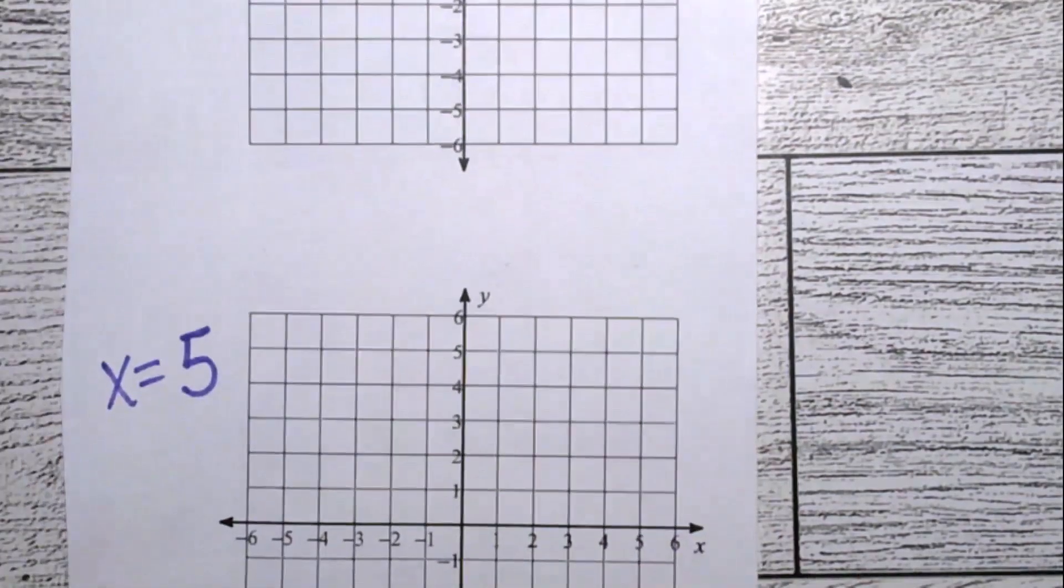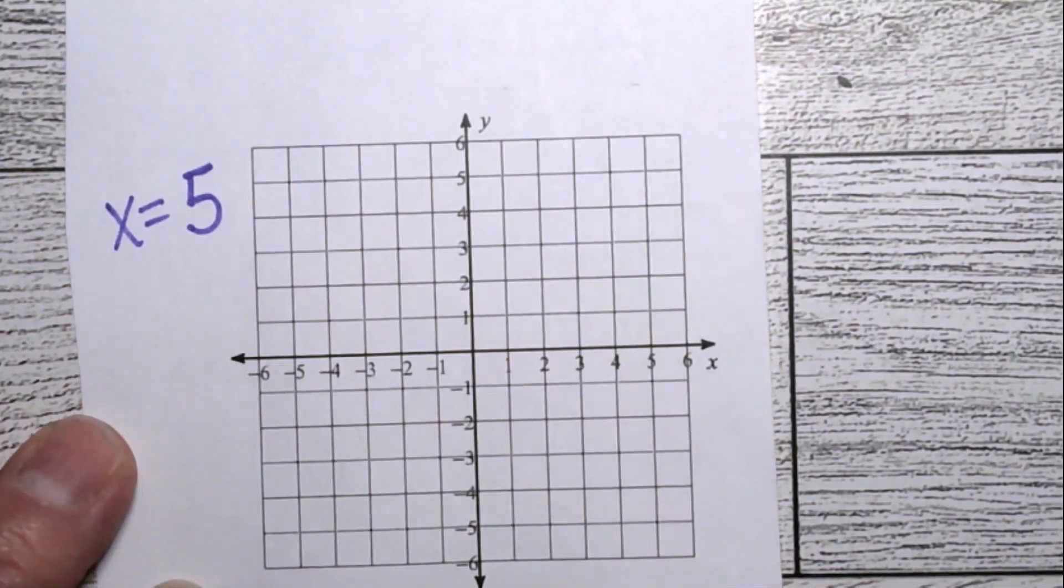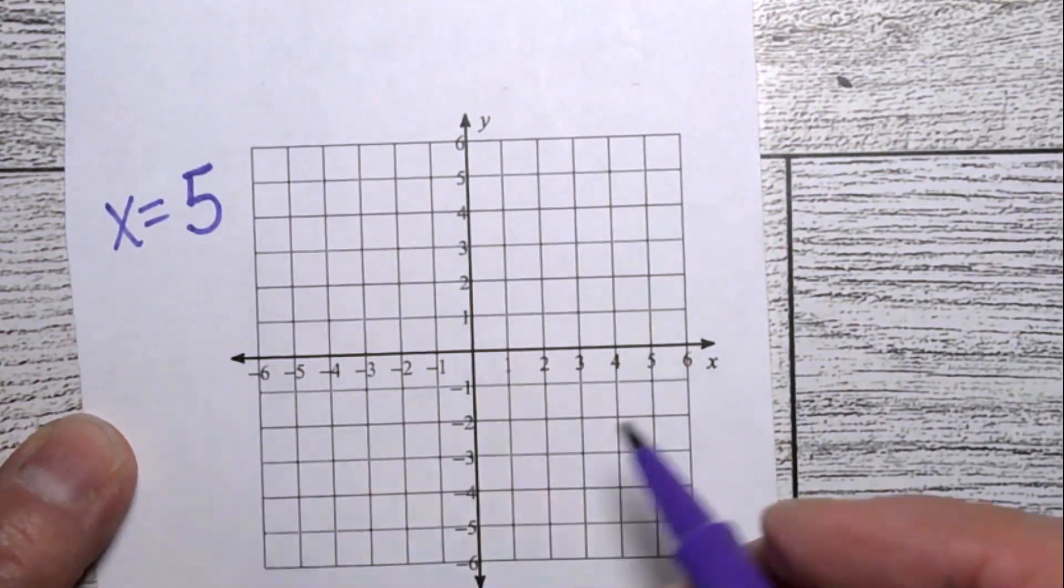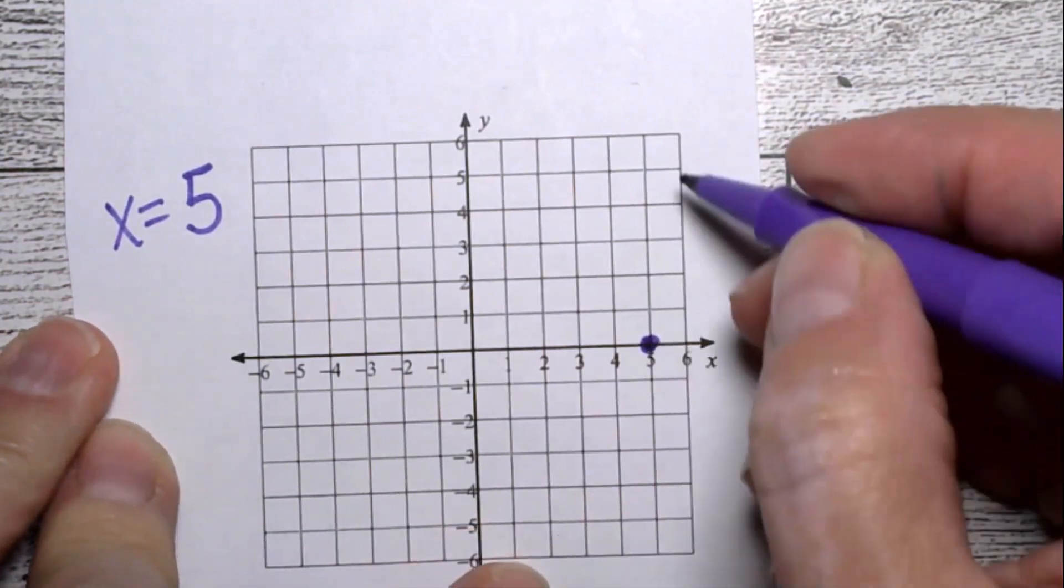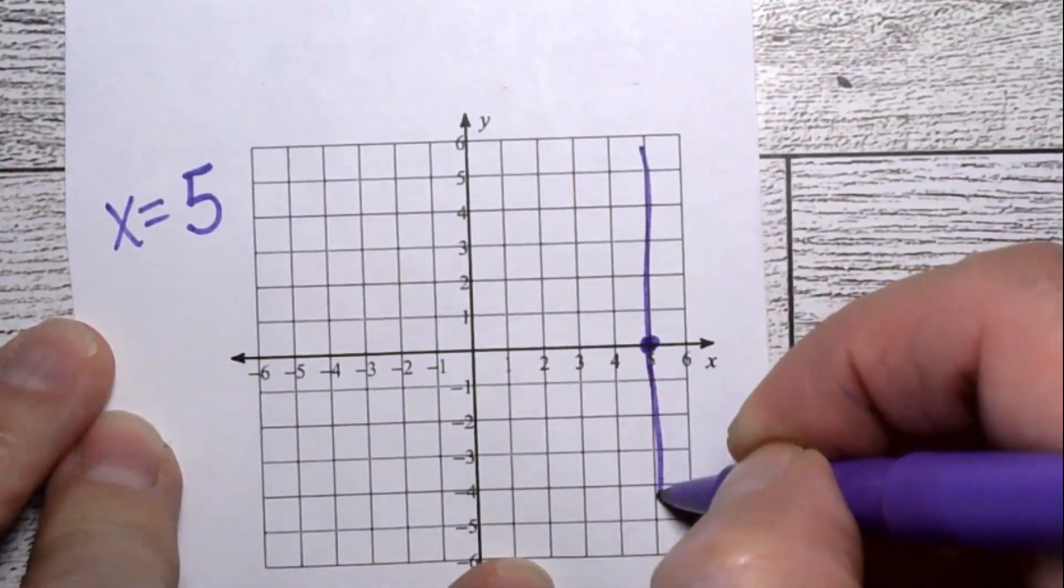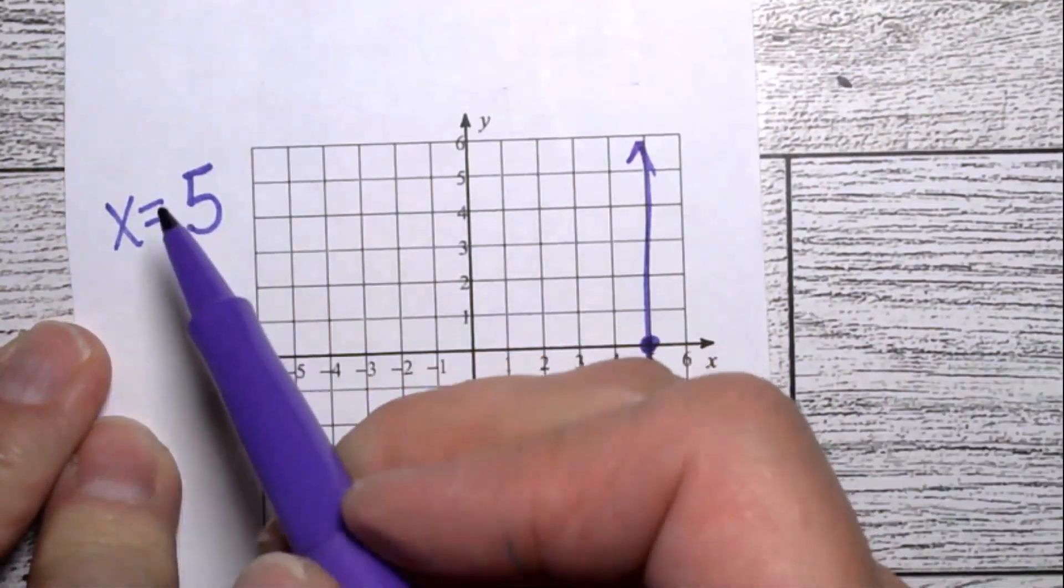x equals 5. You have to think about where you start. You start with the intercept. That's right here. If you drew the point on the x, then we are going up and down. We're keeping the x constant and the y's change. That is the line x equals 5.